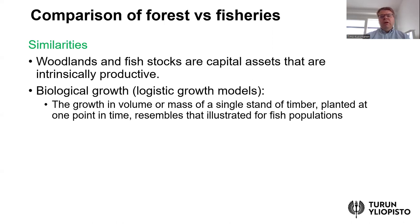There are certain similarities between these resources. Both woodlands and fish stocks can be thought of as capital assets that are intrinsically productive, and the productivity relies on biological growth. We will next look into logistic growth models that can be used to describe both forest and fisheries.